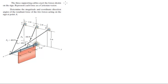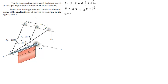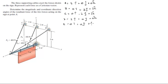First, find the position vectors. A sits at 5i + 0j + 0k. B sits at 0i + 2j + 3k. C sits at 0i − 2j + 3k. D sits at 2i + 0j + 0k. And E sits at 0i + 0j + 3k.